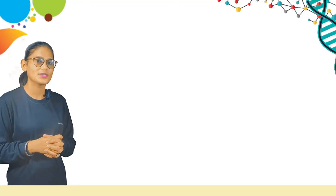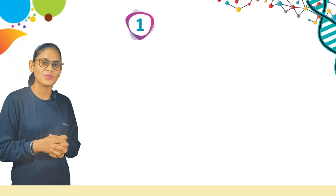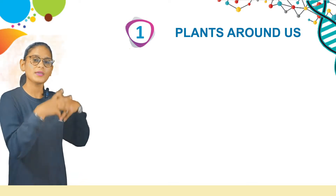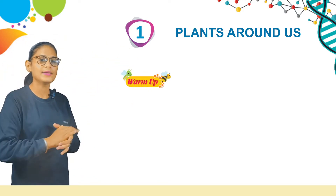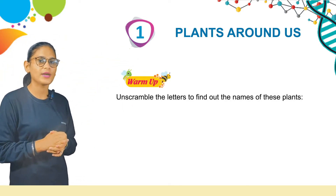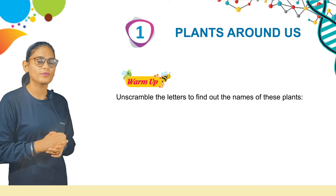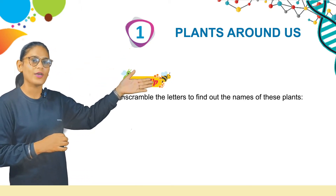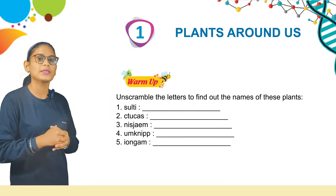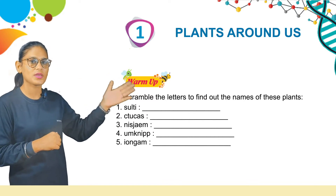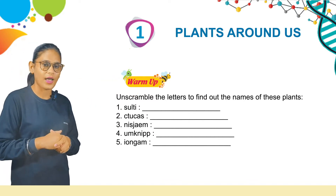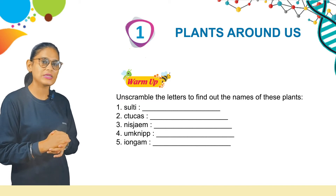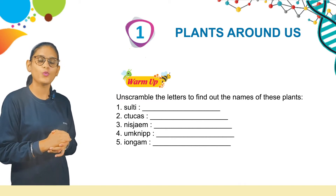Hello kids, today we will discuss Chapter 1, Plants Around Us. Here are some warm-up questions. Unscramble the letters to find out the names of these plants. The first one is Tulsi, and the second one is Cactus. That's how you write the names of the plants from these unscrambled words.